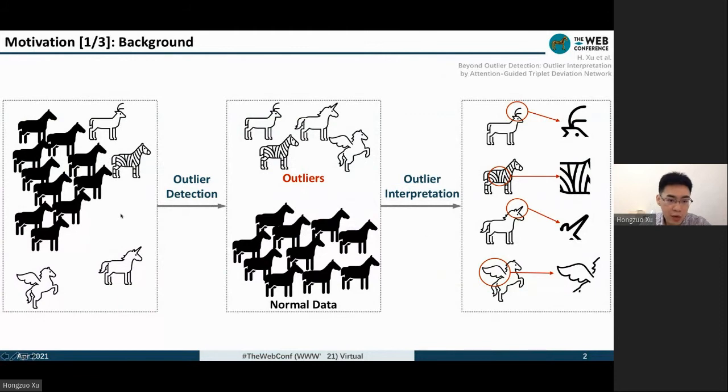Outlier Detection is a very popular task which identifies uncommon data that deviates significantly from the majority. Black horses are normal data in this example.